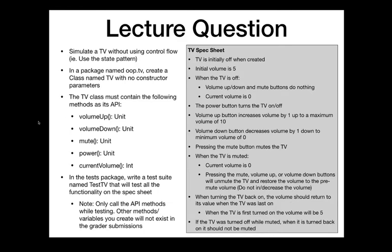The five methods are: volume up, volume down, mute, power, and current volume. The behavior of these methods will change as the TV changes states. The states, behavior in each state, and state transitions are all specified in the spec sheet. A lot of this is parsing that spec sheet, figuring out what behavior you need in each state, and then implementing it. Then write a test suite in the test.tv package — only test the functionality defined in the spec sheet, which is the TV class in OOP.TV with these five methods.